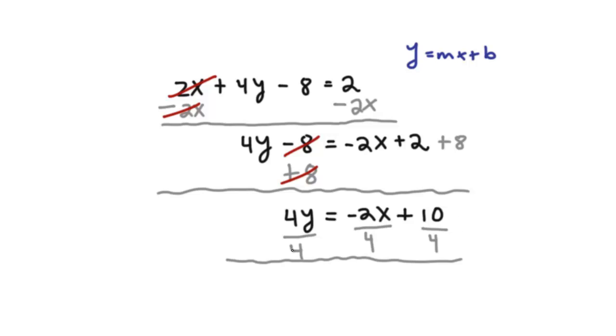Alright? So now, we're left with just the y on the left-hand side, and that's what we want. This 4 and this 4, they go to 1. So we're all set with that.